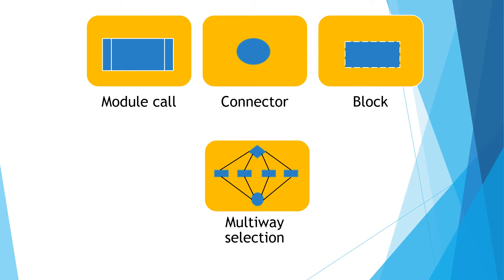The last symbol is called multi-way selection. This symbol allows the selection of one out of many alternatives — not only two. Suppose there are four alternatives, and from those four alternatives we get a single result. It allows selection of one out of many alternatives, going through any one way. These are the symbols we use to draw a flowchart to solve a problem.